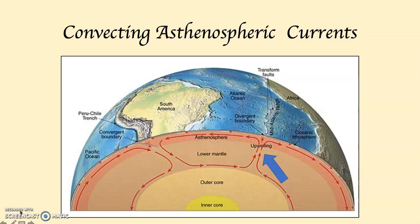This is because of these convecting currents. If you look where the blue arrow is on this diagram, you can see it says upwelling — just above that is the Mid-Atlantic Ridge. Notice how within the asthenosphere, these convecting currents pull apart, ripping the crust open.